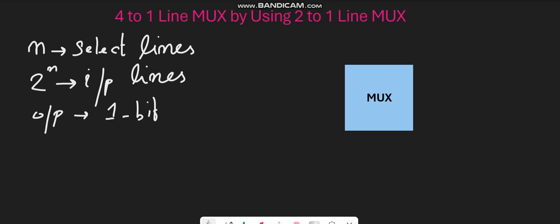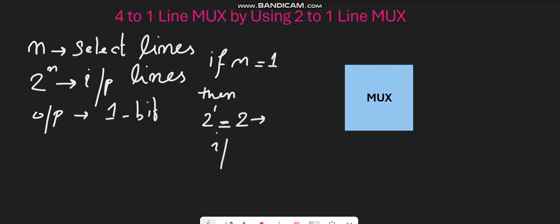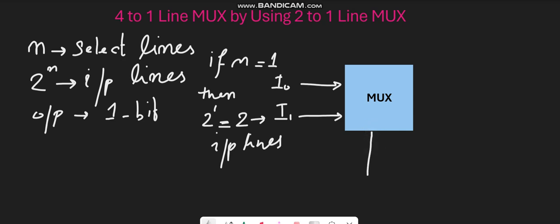The output line will always be a single output line. So assuming that n is equal to 1, then as per the rule you will have 2 raised to power 1, which is equal to 2 input lines, and you will have a single output path. Let's assume the block is representing a MUX — it will have two input lines, i0 and i1, and a single select line represented by s0, and here you can see a single output line.